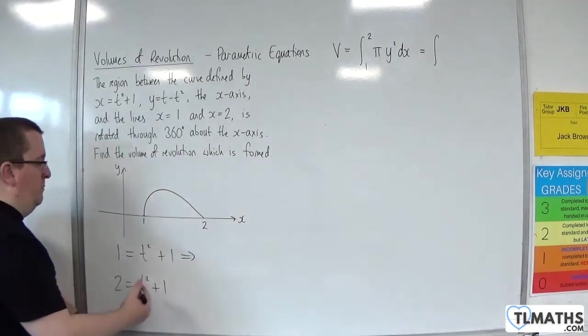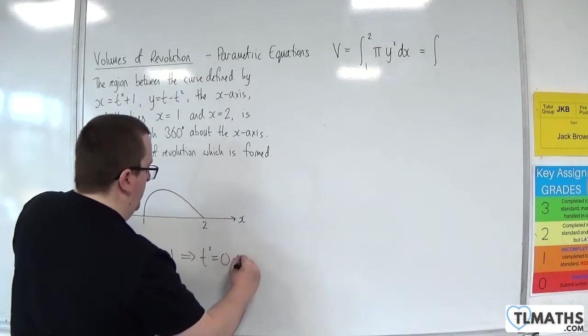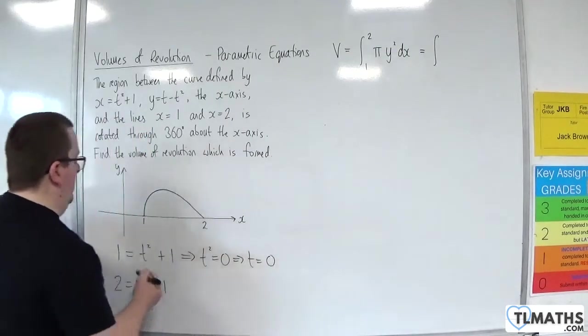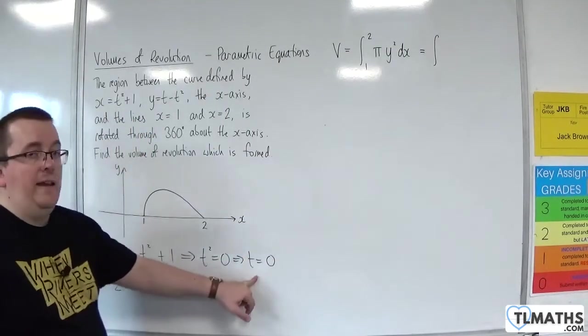Subtracting 1 from both sides, we're going to get t squared is 0, so t is 0. So when x is 1, t is 0.